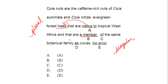The error in this sentence occurs at B. We change 'a member,' which is singular, to 'members,' which is plural. Let's reread: 'Cola nuts are the caffeine-rich nuts of Cola amanata and Cola nitida, evergreen forest trees that are native to tropical West Africa and that are members of the same botanical family as cocoas.'